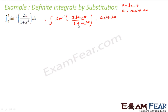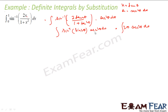Now, 2 tan θ/(1 + tan²θ) = sin 2θ, which we know. So this becomes sin⁻¹(sin 2θ) · sec²θ dθ, and sin⁻¹(sin 2θ) = 2θ. So the integral is ∫2θ · sec²θ dθ. Now I have to find the upper and lower limits. Since x = tan θ, we have θ = tan⁻¹(x).